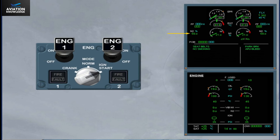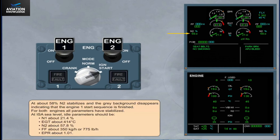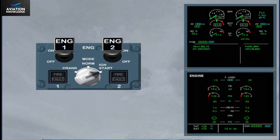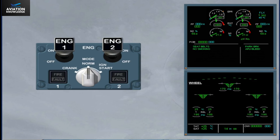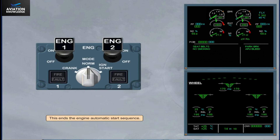For both engines, all parameters have stabilized. At idle, parameters should be: N1 about 21.4%, EGT about 414 degrees Celsius, N2 about 57.8%, fuel flow about 350 kg per hour or 775 pounds per hour, and EPR about 1.01. The last action is to switch the engine mode selector to normal. On the system display, the ECAM engine page is replaced by the ECAM wheel page. Note: after start, to avoid thermal shock, it is recommended the engines be operated at or near idle for at least 2 minutes. This ends the engine automatic start sequence.